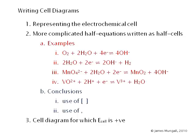So I'd hope now that you'll be able to pick up any half equation, have a look at the species on each side of the equilibrium, put a square bracket to bundle them together, and then within the half cell use the comma in the place of the equilibrium. Okay, so finally we'll go on to the cell diagram for which E cell is positive, the spontaneous reaction.